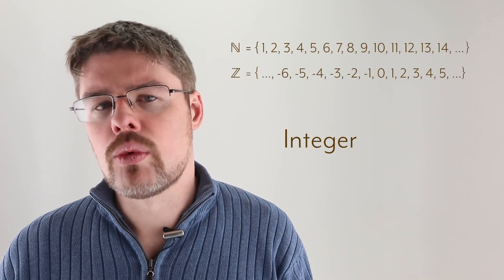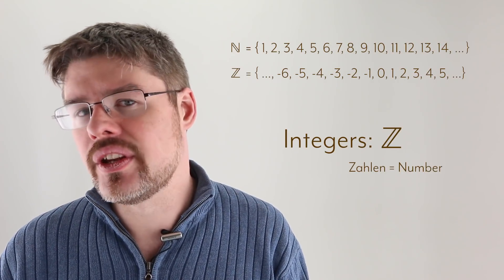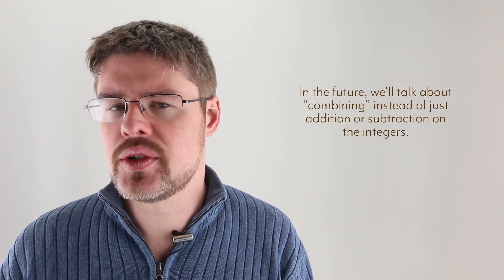The integers are represented with a Z for the German word Zahlen, which means number. In a future video, we're going to recast subtraction as a very special kind of addition on the integers. But for right now, that's enough for this video.